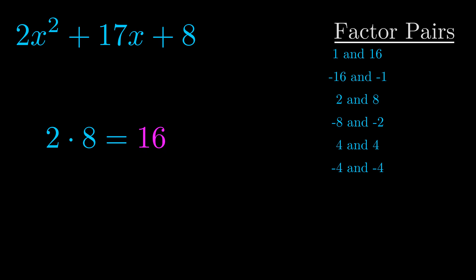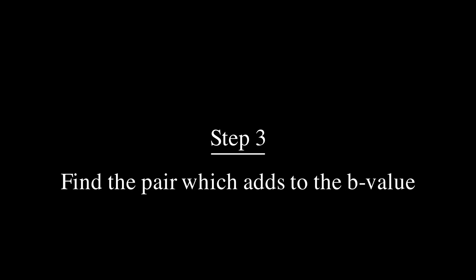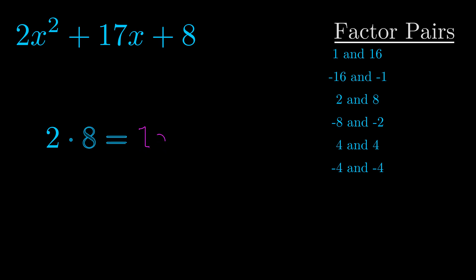Now once you have these factor pairs the goal is to find which of these pairs adds to the b value. The b value is the coefficient on the x term. That's the middle term, the one that we haven't done anything with yet. And really this is the only factor pair that we need.